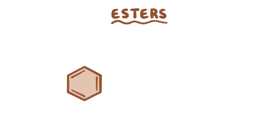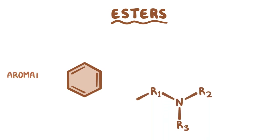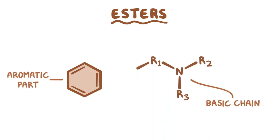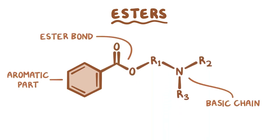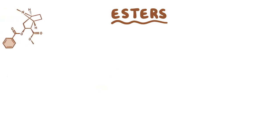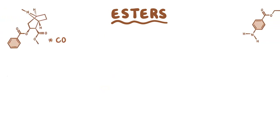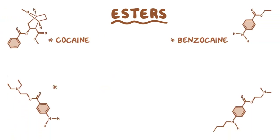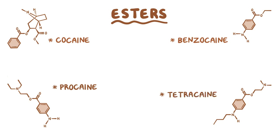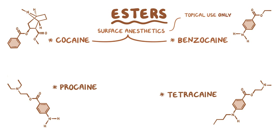Local anesthetics can be divided into esters and amides based on their molecular structure. Esters are made up of an aromatic part and a basic chain linked by an ester bond. This class includes cocaine, benzocaine, procaine, and tetracaine. Cocaine and benzocaine are surface anesthetics for topical use only, since they have serious side effects.